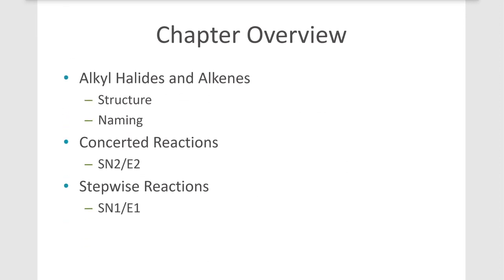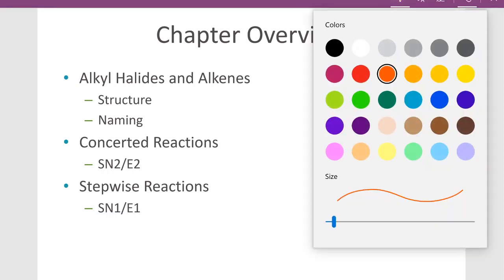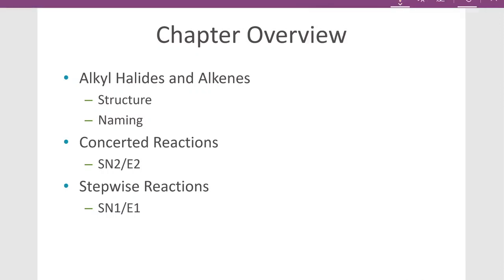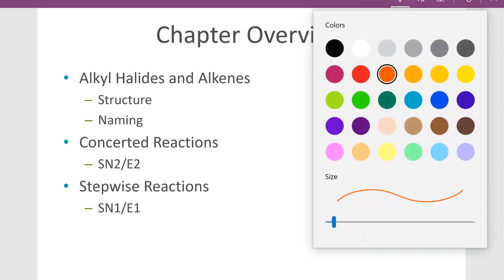Just as an overview, we're going to be discussing naming of alkyl halides and alkenes and their structures and some properties. We're also going to discuss concerted reactions, and there are two different mechanisms we'll have in this chapter for that, the SN2 mechanism and the E2 mechanism.